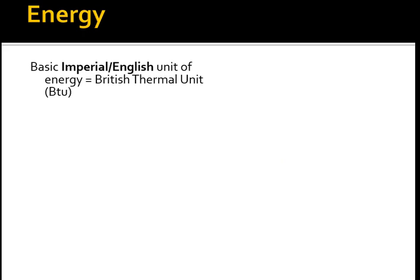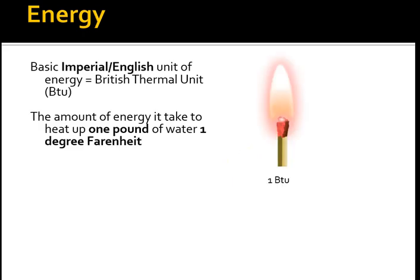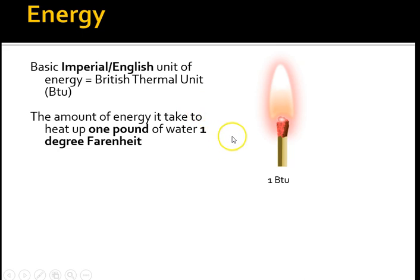A basic review of energy units: the BTU is our basic unit of energy in the U.S. It's defined as the amount of heat required to heat one pound of water one degree Fahrenheit. For purposes of this introductory energy class, one pound of water at any temperature requires one BTU to raise it one degree Fahrenheit. To visualize a BTU, if you take a wooden match and burn it all the way down, you release about one BTU of heat energy. That's our basic English unit of energy.